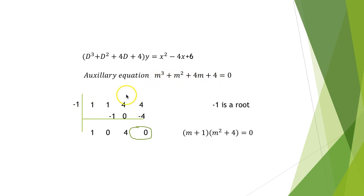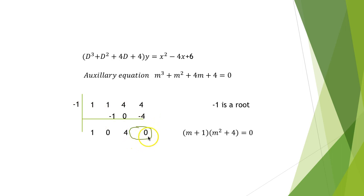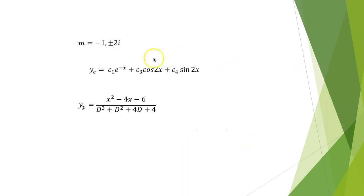Using synthetic division with coefficients 1, 1, 4, 4 and root −1: bring down 1; 1×(−1) = −1; 1−1 = 0; 0×(−1) = 0; 4+0 = 4; 4×(−1) = −4; 4−4 = 0. This gives the quotient m² + 4. So (m+1)(m²+4) = 0, giving roots m = −1 and m = ±2i. The complementary function is c₁e^(−x) + c₃cos(2x) + c₄sin(2x).